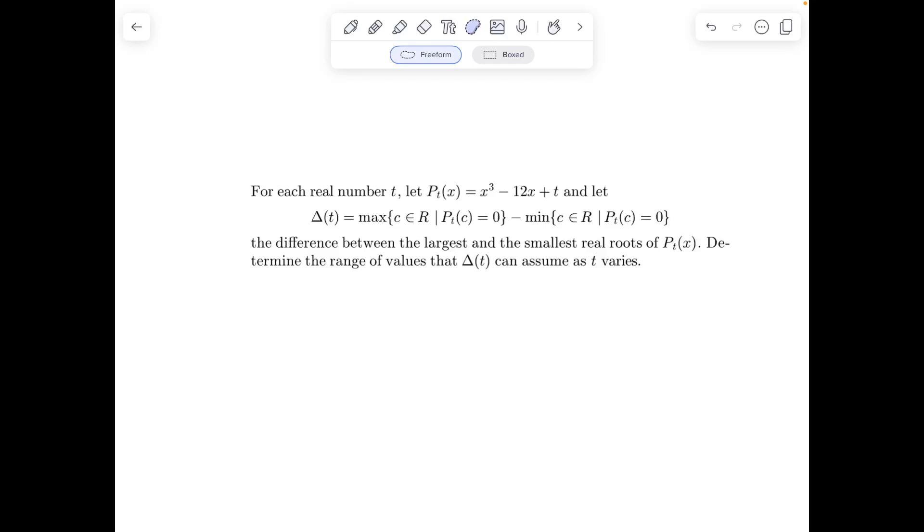Good evening all of you, and seeing the recent styling trend of J-advance examination, here is the problem for you. Please like and subscribe to the channel and share it among your friends to get quality content for free. For each real number t, P(t) is given as a cubic polynomial, and let Δ(t) be defined as max{c ∈ ℝ: P(t)(c) = 0} minus min{c ∈ ℝ: P(t)(c) = 0}, the difference between largest and smallest real root of P(t) basically. Determine the range of values that Δ(t) can assume as t varies.